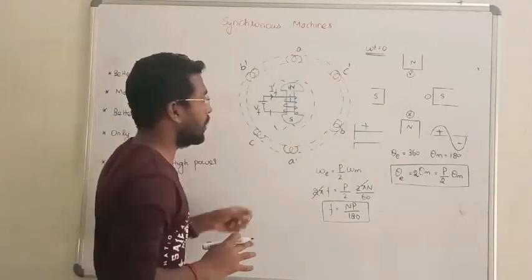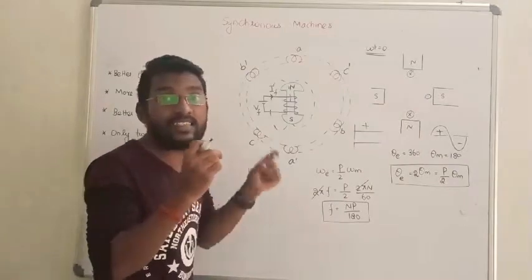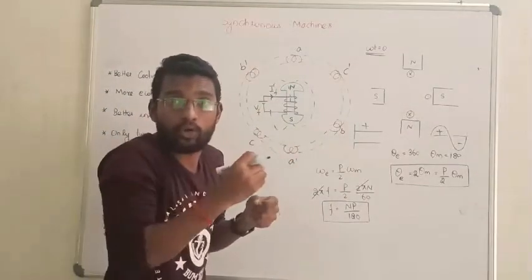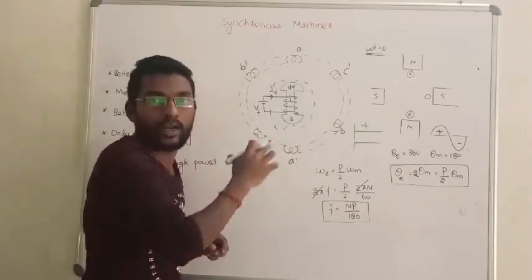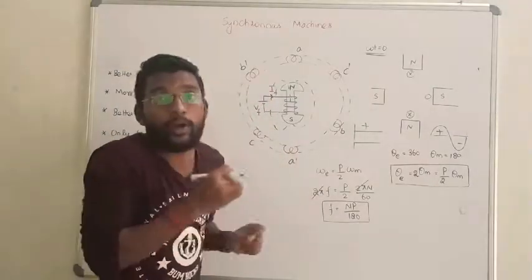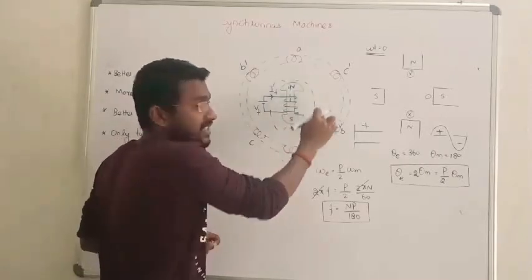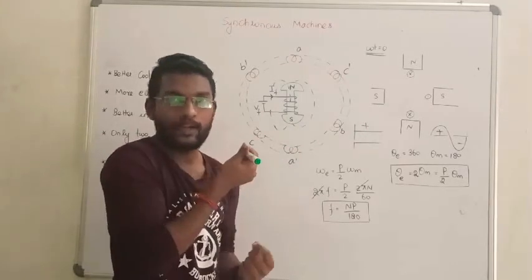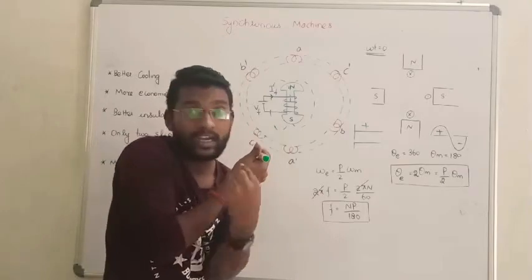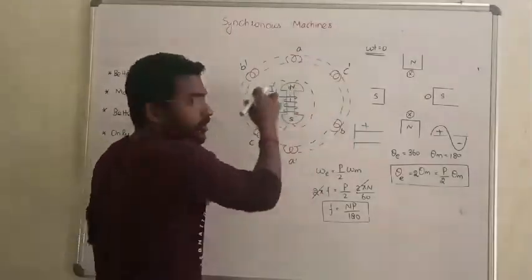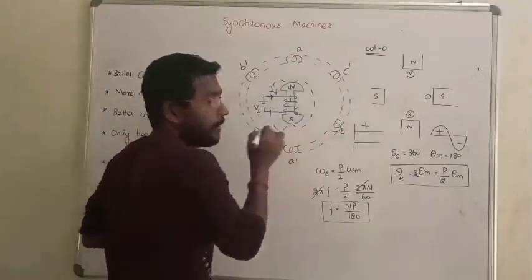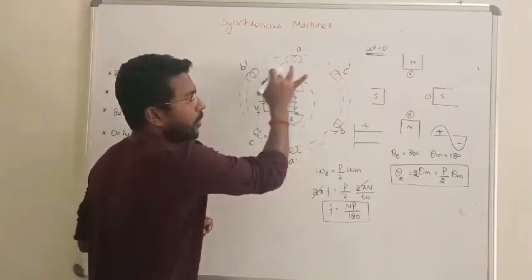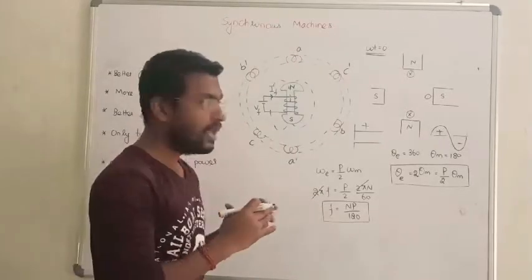If we have to rotate the rotor at the same speed as the AC revolving field — in other words, at synchronous speed — then the flux developed in the rotor will also rotate at synchronous speed. The machine will then come into synchronism, and the machine will run at synchronous speed.